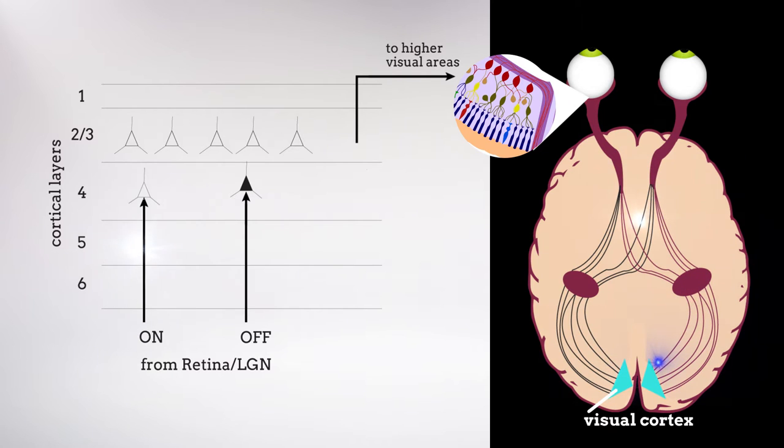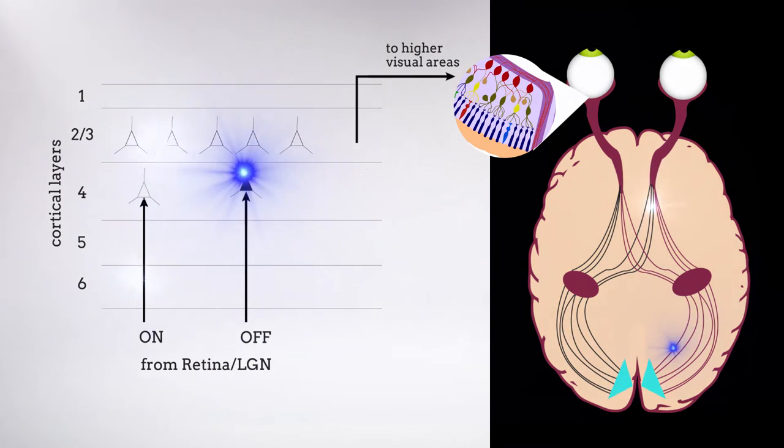Neurons in the superficial layers of the cortex, which is the main pathway to the higher-order visual areas that create our perception of the visual world, seem to receive mixed information from both the on and off pathways. If this is the case, how does the brain allow us to perceive differences in bright and dark?